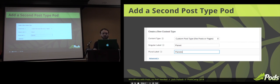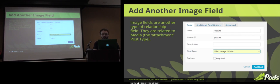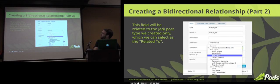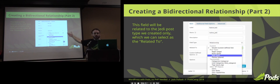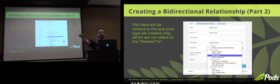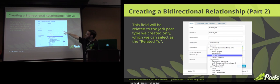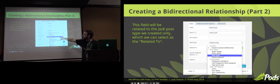We're going to add our second pod so that we can have a relationship. Same system — we just give it a name and keep it as a plural label. We're going to add another picture field here. Then we go on with the second part of creating our bidirectional relationship. We're going to add a field here — this is the from field, coming from Jedi to Planets. We call this field Native Jedi and set it as a relationship. What's it related to? It's related to the Jedi post type. You'll see all the possible options: other post types, taxonomies, other WordPress objects.